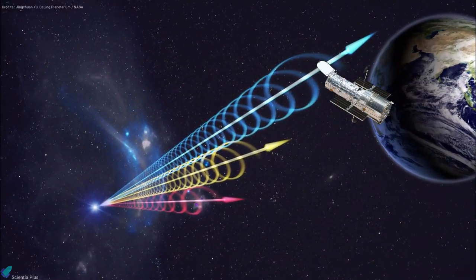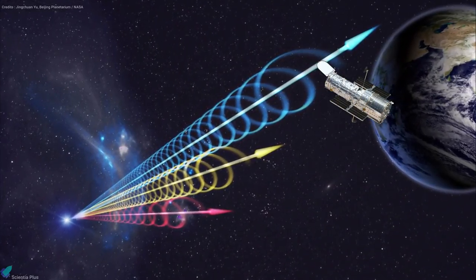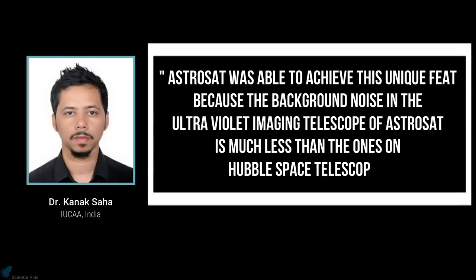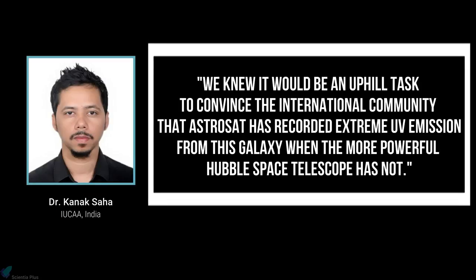The radiation is too faint that NASA's Hubble Space Telescope has not detected any ultraviolet emission from this galaxy. When asked about this, Dr. Saha said, AstroSat was able to achieve this unique feat because the background noise in the ultraviolet imaging telescope of AstroSat is much less than the ones on Hubble Space Telescope. We knew it would be an uphill task to convince the international community that AstroSat has recorded extreme UV emission from this galaxy when the more powerful Hubble Space Telescope has not.